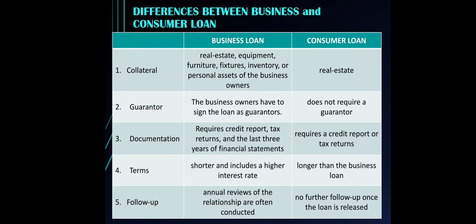Now, what are the differences between business and consumer loans? First, in terms of collateral — for business loans, there are a lot of properties that could be used as collateral: real estate, equipment, machineries, furniture, fixtures, inventory, or even personal assets of the business owners. However, for consumer loans, only real estate is accepted. Real estate may refer to lots, house and lots, houses, buildings,